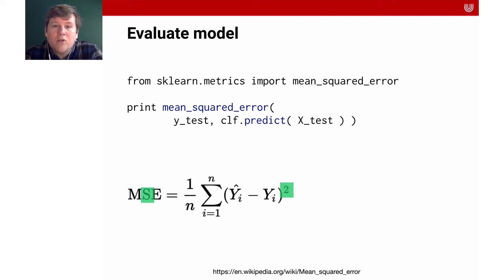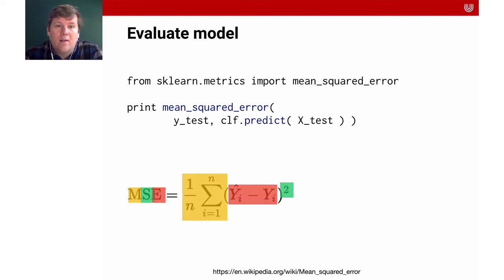We also want small errors to not be as problematic as large errors, and that's another reason why we square the points. The mean squared error is one important evaluation metric in regression.